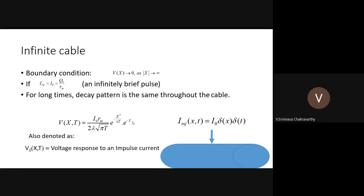The solution for this impulse input is given (you can verify by substituting into the original equation as a straightforward exercise). This function of both space and time has a Gaussian spatial distribution, with the variance growing with time (denominator 4T in the exponent X²/4T). The temporal variation is more complicated: there is a 1/√T term and an e^(−T) term.